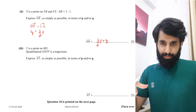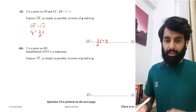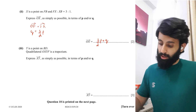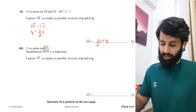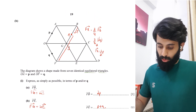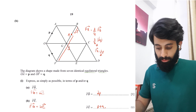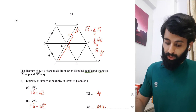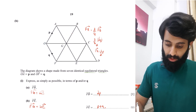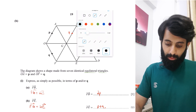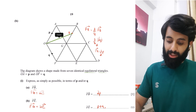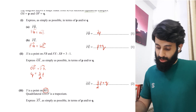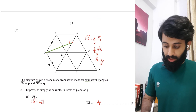This is the part many students struggle with. Part 3 says Y is a point on BD, and quadrilateral OXYF is a trapezium. A trapezium has just one pair of parallel sides. We can see O, X, and F — we can't yet see Y, but it's a point somewhere on BD. Since OXYF is a trapezium, we need to identify which two sides are parallel.